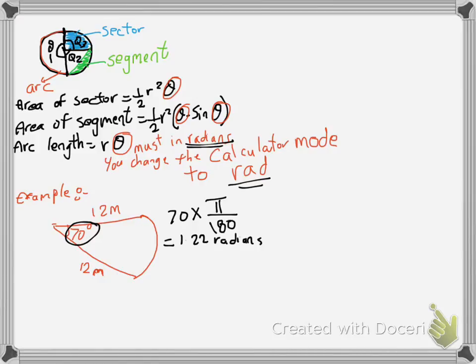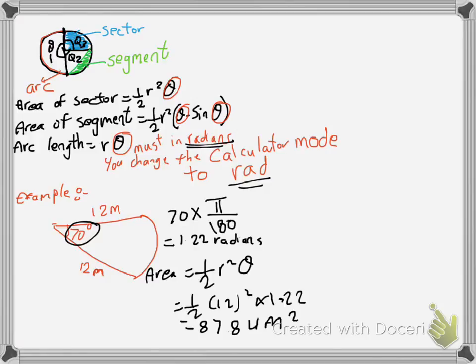Then now you can use the formula for the area of a sector, which is area equals half r squared theta. So it's half times 12 squared times 1.22. That's 0.5 times 12 squared times 1.22, and that gives me 87.84 meters squared.